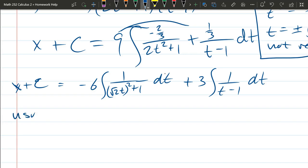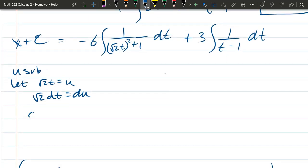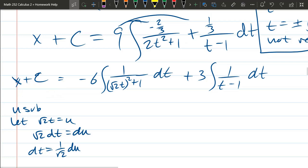Why did I do this? We're ready for a u sub. And we can let square root 2t equal u. So square root 2 dt equals du. And there is no square root 2. So dt is 1 over square root 2 du. Do not rationalize ever. Unless you're told to. So we have negative 6 over square root 2 integral 1 over u² + 1 du. Over here, the other one, you could do a u sub, but hopefully you've done enough of these. This is just ln t - 1.